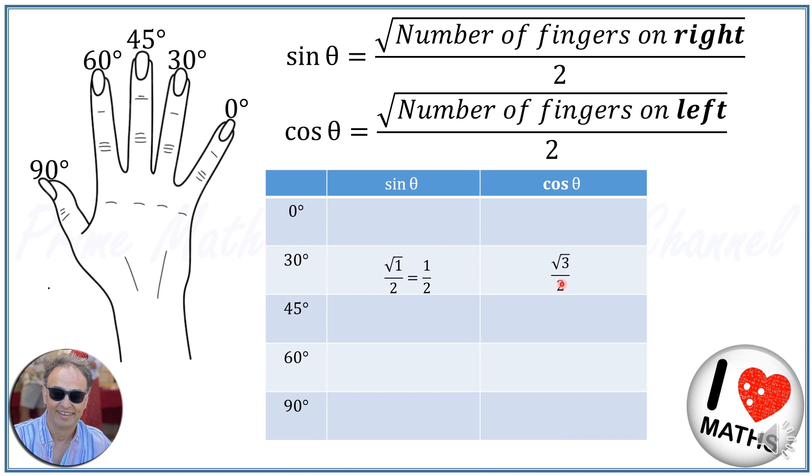Let's try another one. What about the sine and cosine of 60 degree? 60 degree is here, so we have 1, 2, 3 fingers on the right. So sine of 60 degree will be square root of 3 over 2. And the cosine of 60 degree will be number of fingers on the left divided by 2. We have only one finger on the left hand side of 60 degree finger, so it will be square root of 1 over 2, or simply 1 over 2.